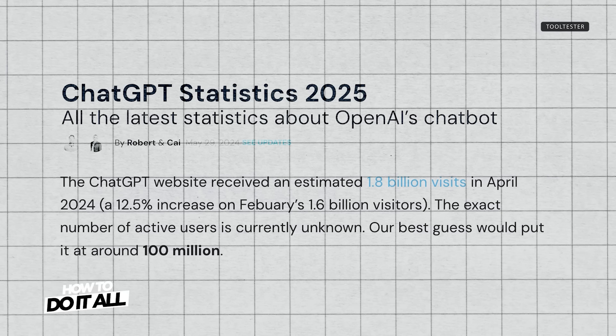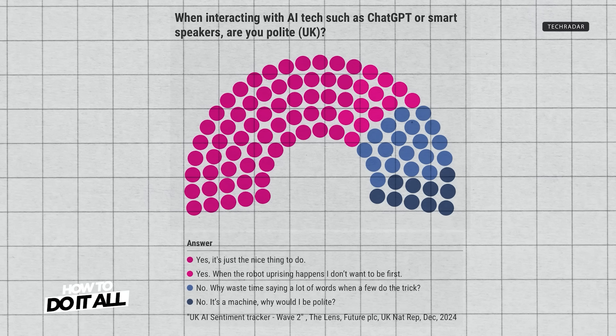Each prompt you send to ChatGPT amounts to bite-sized tokens, and adding unnecessary phrases like please and thank you increases the computing power needed for your prompt. In April 2024, ChatGPT had 1.8 billion users, and a study in the same year indicated that 67% of U.S. users are polite to their chatbot. And though it's difficult to estimate exactly how much computing power etiquette has cost, that's a lot of unnecessary please and thank yous that really serve no practical purpose.